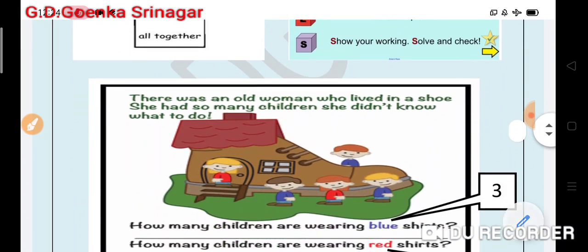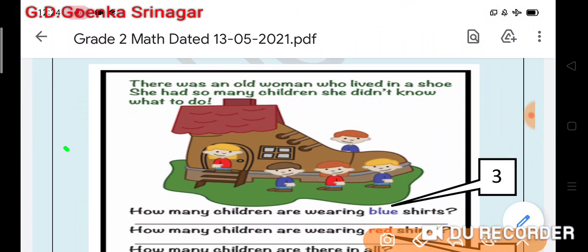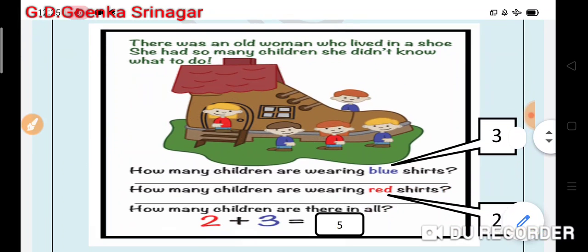Alright, so let us have a look at the example here. There was an old woman who lived in a shoe. She had so many children. She did not know what to do. Now let us see the questions here.